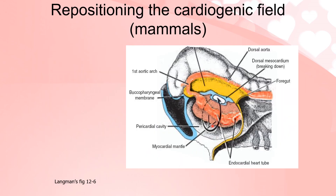Another diagram shows the fused endocardial tube — this is the venous end and this is the outflow region, where the endocardial tube is attached to the first aortic arch. The next layer is the myocardium, and the pericardial cavity is present here. The dorsal mesocardium is visible, and behind it is the foregut.